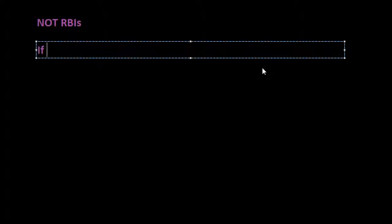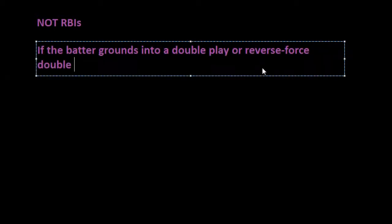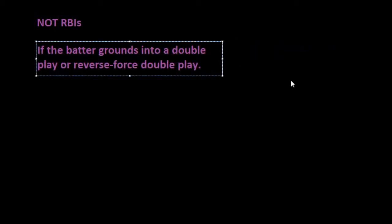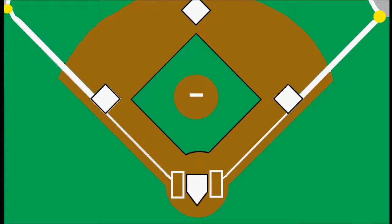The first one is if the batter grounds into a double play, or what we would call a reverse force double play. The situation here would be that we have runners on — a runner on first and third, runners on the corners — and then our batter's up.